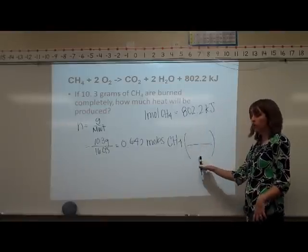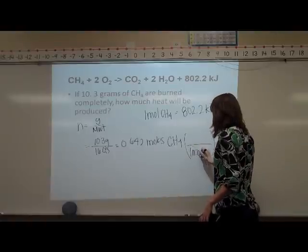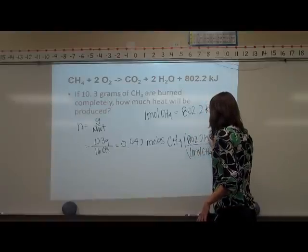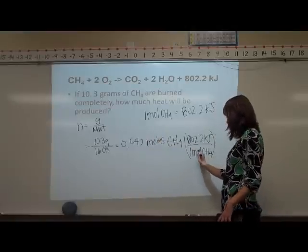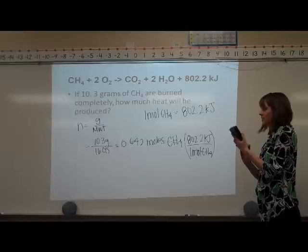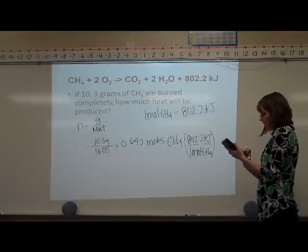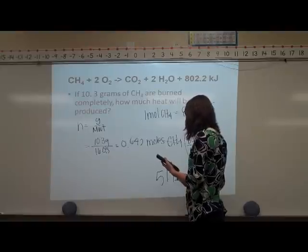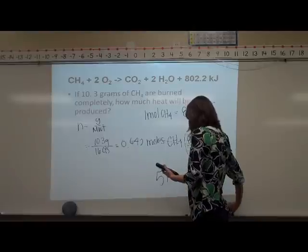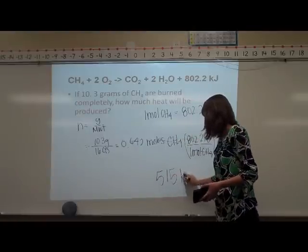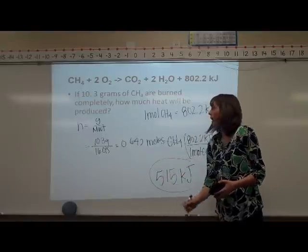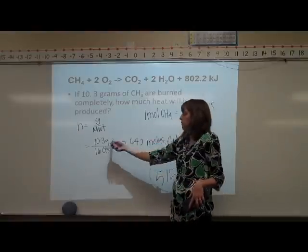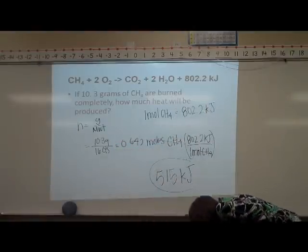We're going to put our moles of CH₄ on bottom so that our moles can cancel, and we're going to put our 802.2 kilojoules on top. When our moles of CH₄ cancel, we're going to take our 0.642 and times that by 802.2. We'll be left with 514.506. Round it up, so 515 kilojoules will be our final answer. That's how much heat we're going to make when we burn 10.3 grams of CH₄.